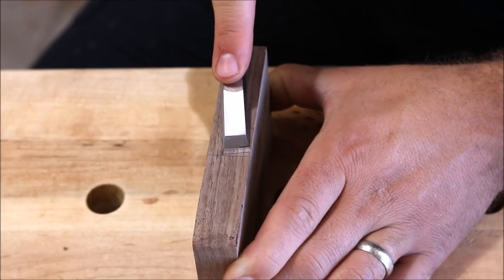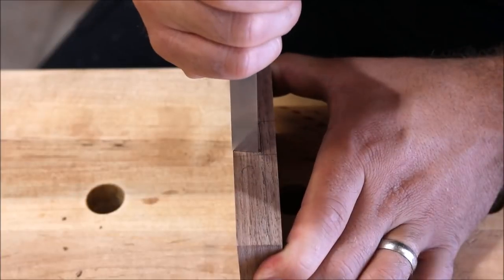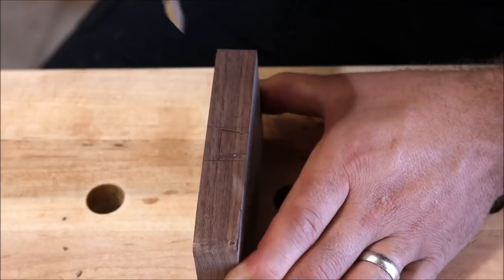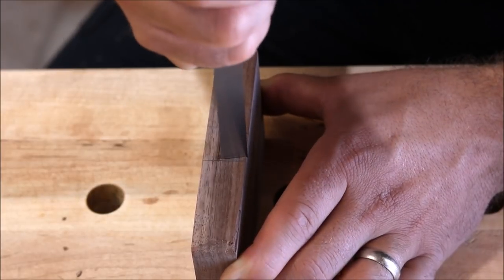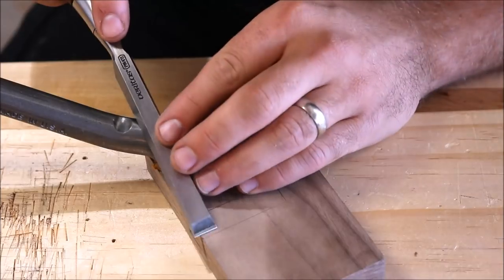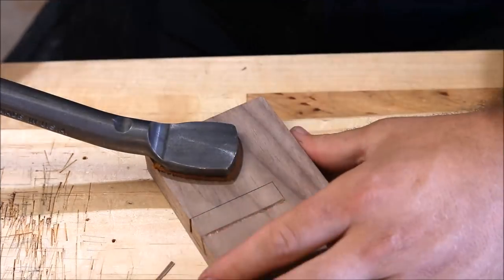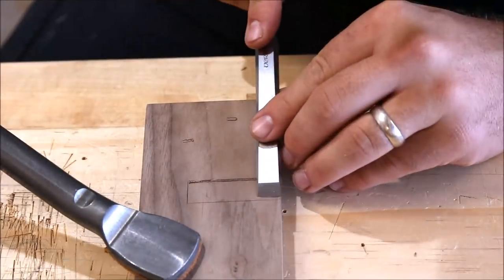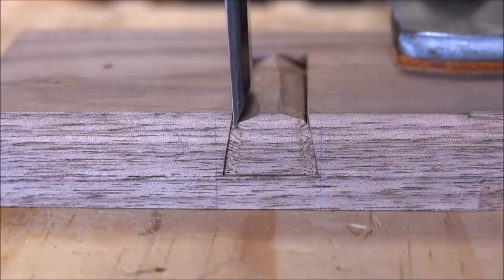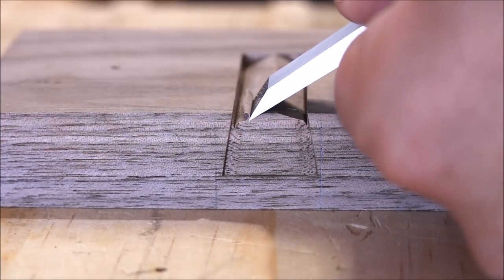I'm just going to take my chisel real quick and deepen this knife wall on the front edge. Now I'll do the same thing on the side of it. Now that I've established a knife wall I'm going to start chopping down and then paring waste away.